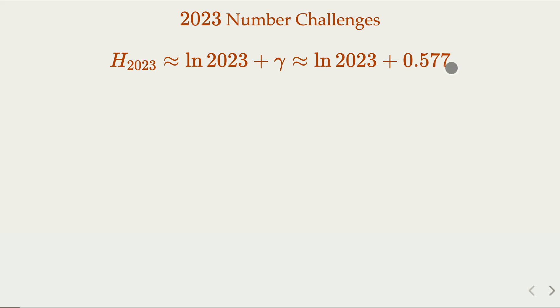So how to evaluate log 2023? If you're familiar with the log, natural log, you probably want to know the value of log 2 and log 10, which is a common value that you want to remember. So log 2 is about 0.693 and log 10 is about 2.303.